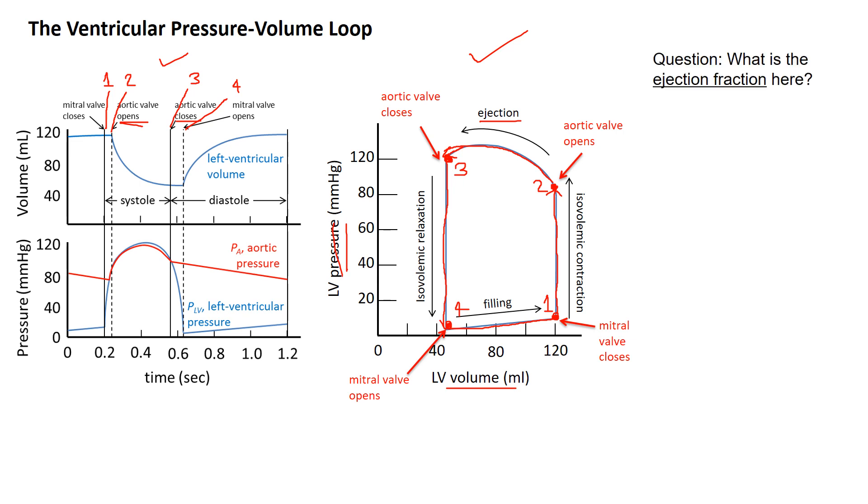Same question again: what's the ejection fraction here? We can just about read the ejection fraction off the pressure-volume loop. That's one of the reasons why the pressure-volume loop is useful. The end diastolic volume, the maximum volume here, is 120 in this case, and systolic volume is something like 45. So 75 milliliters of the blood is ejected. By the way, 75 milliliters is called the stroke volume. The stroke volume divided by the diastolic volume is the ejection fraction, the fraction of the volume that gets ejected. 75 milliliters divided by 120 milliliters equals 62.5 percent.